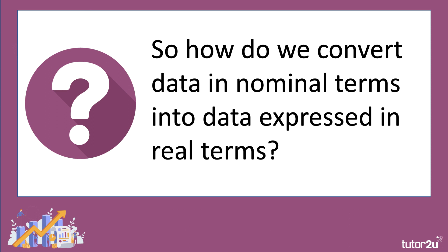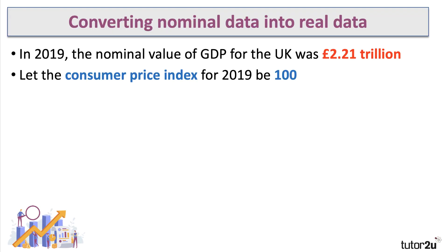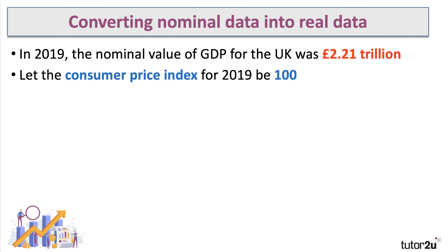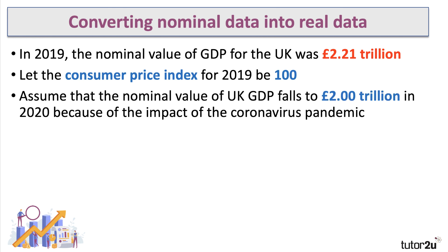So we want to know whether the economy is getting bigger or smaller in real terms — therefore we have to make a calculation. How do we convert data in nominal terms into data expressed in real terms? We're going to work through a quick example. In 2019, the nominal or monetary value of GDP for the UK was 2.21 trillion, and we're going to take the consumer price index for 2019 and give it a base year value of 100.